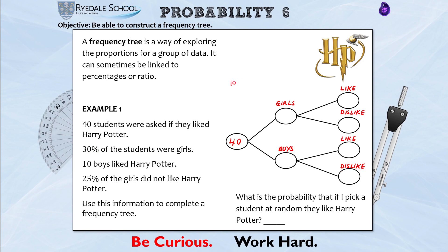30% of the students were girls — so how can I work out 30%? I can find 10% by dividing by 10: 10% of 40 is 4. I need 3 lots of that, so 30% is 12 girls. Although we haven't been told the number of boys directly, we know that 40 minus 12 gives us 28 boys. These branches must add to make the total, so we can work out values like this as we go.